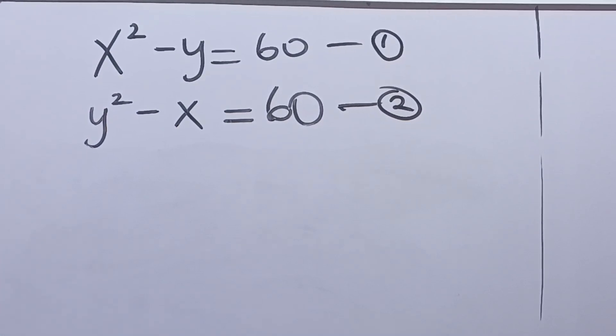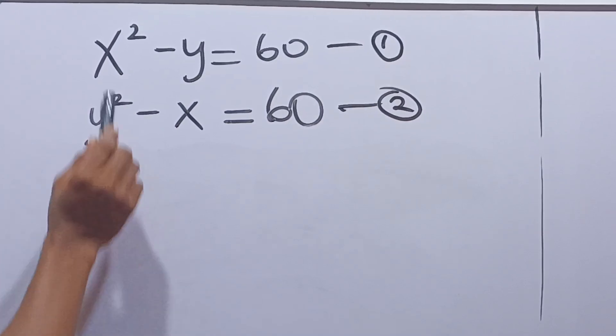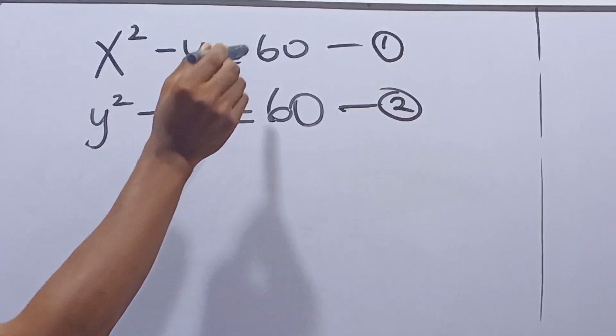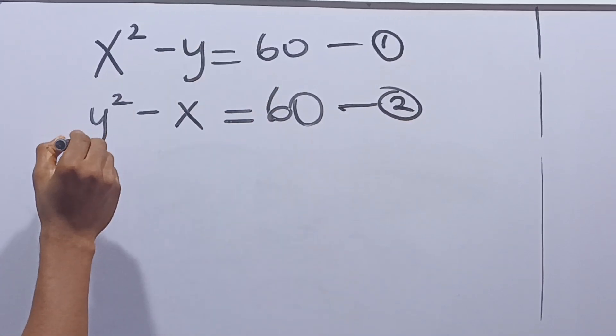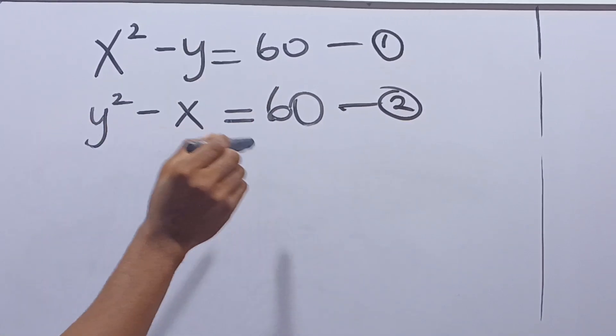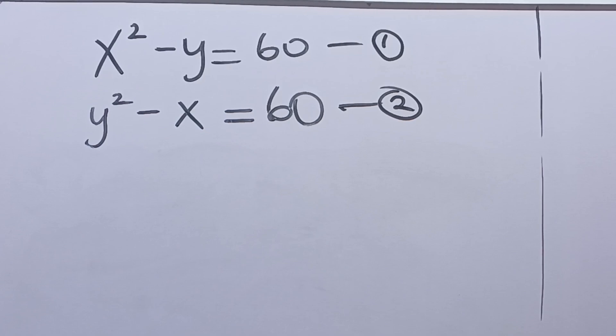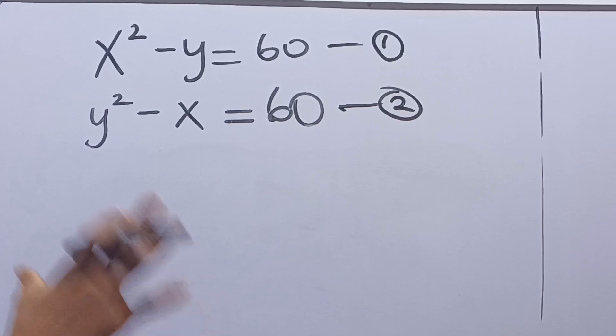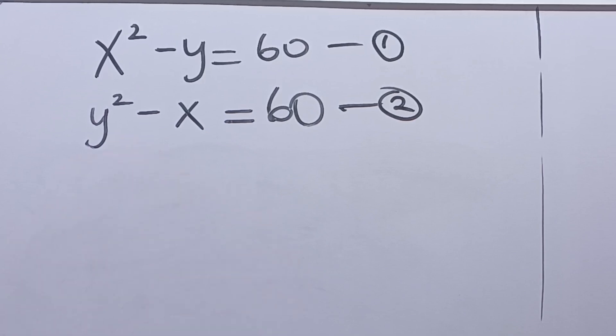Let's solve this together. It says x squared minus y is equal to 60 and y squared minus x is equal to 60. We're going to solve the values of x and y.